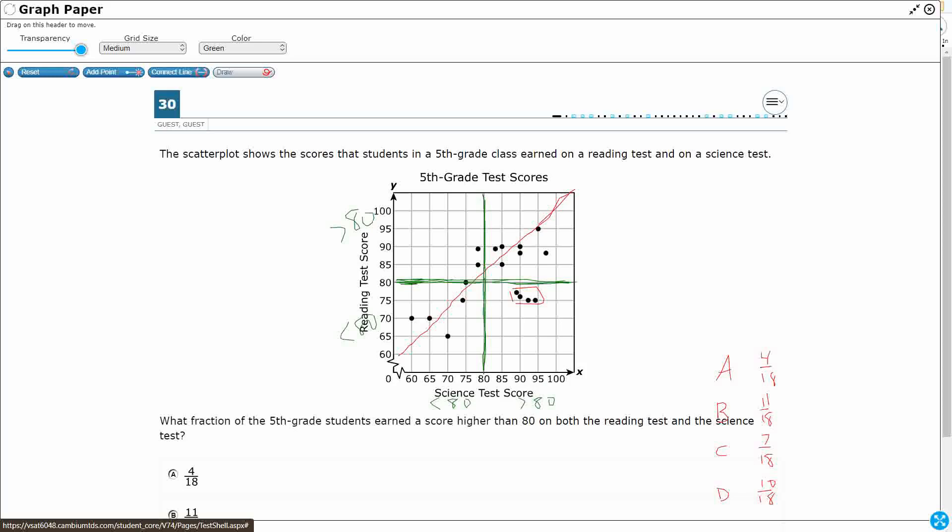So if we're breaking it up into this, really what we're looking at is, I'll see if I can get some yellow on here, we're looking at this section right here, that very top right section. You see it's greater than 80 on the science right here, and then greater than 80 on the reading. All right, so how many kiddos do we have in there?